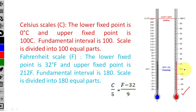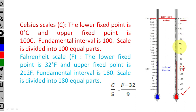On the Celsius thermometer, the lower fixed point is 0 and the upper fixed point is 100. The minimum value is 0 and the maximum value is 100, with 0 to 100 divided into equal parts.